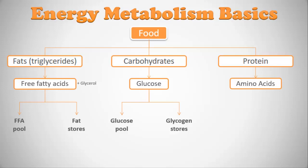When we have a carbohydrate meal, it's broken down into glucose. A lot of that glucose floats in our blood as a glucose pool, and some is stored as glycogen inside your muscle and also in your liver. Protein is broken down into amino acids, which move around the body forming the amino acid pool. It can also be stored in the body as protein — this is really what your muscles are made of.